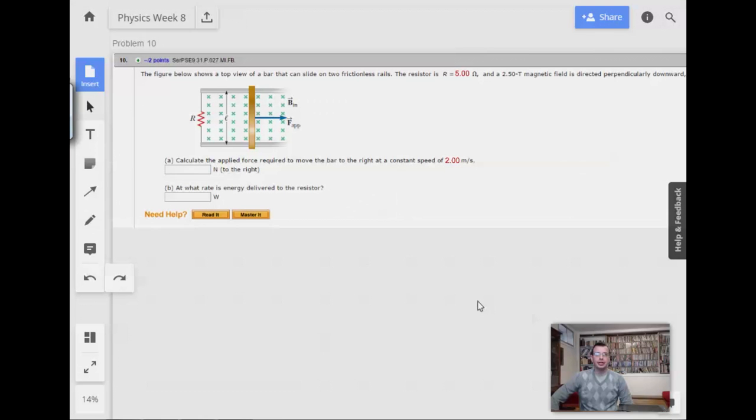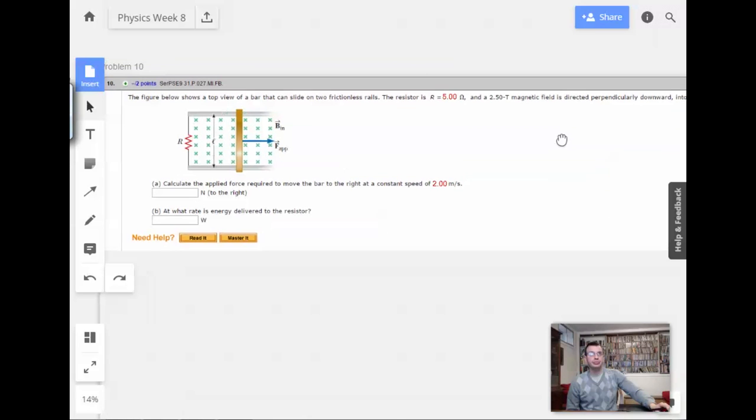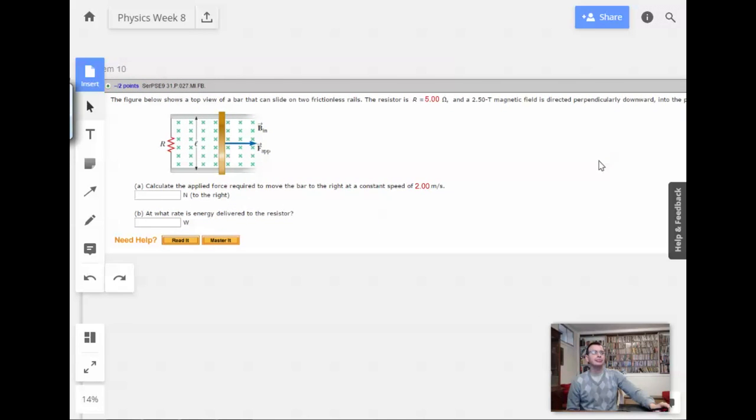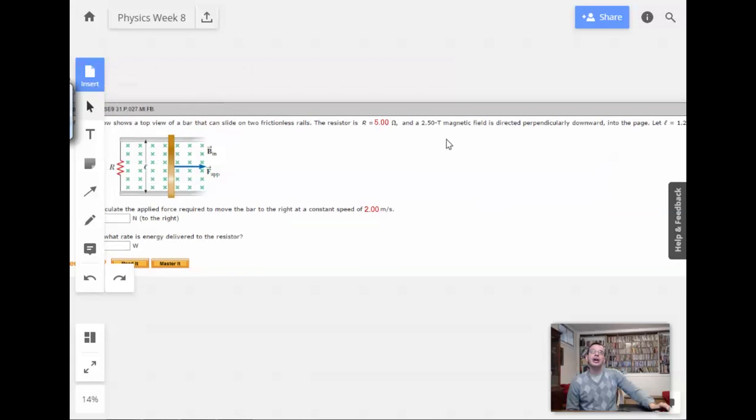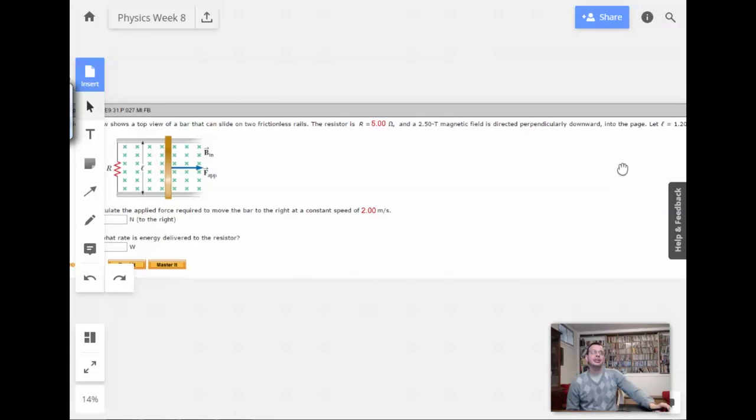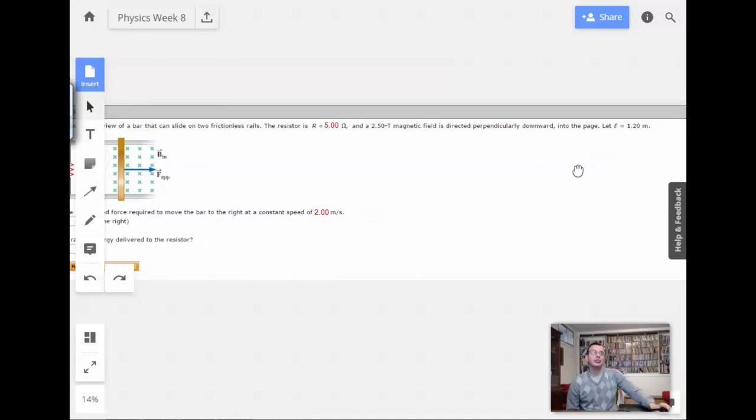Week 8, problem 10. The figure below shows a top view of a bar that can slide on two frictionless rails. The resistor is 5 ohms and a 2.5 Tesla magnetic field is directed perpendicularly downward into the page.